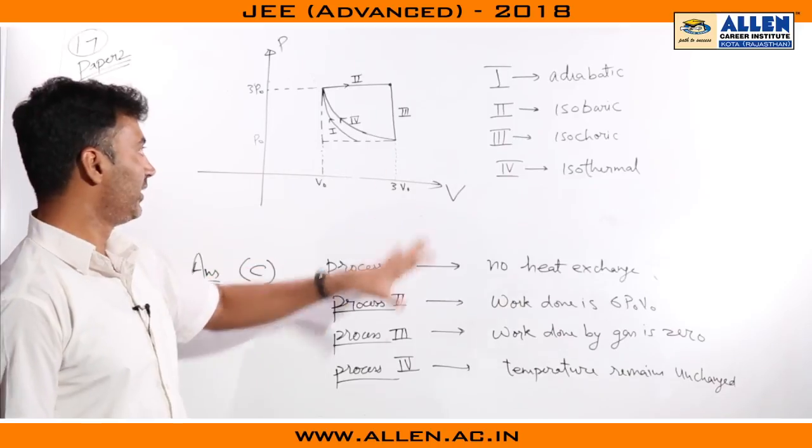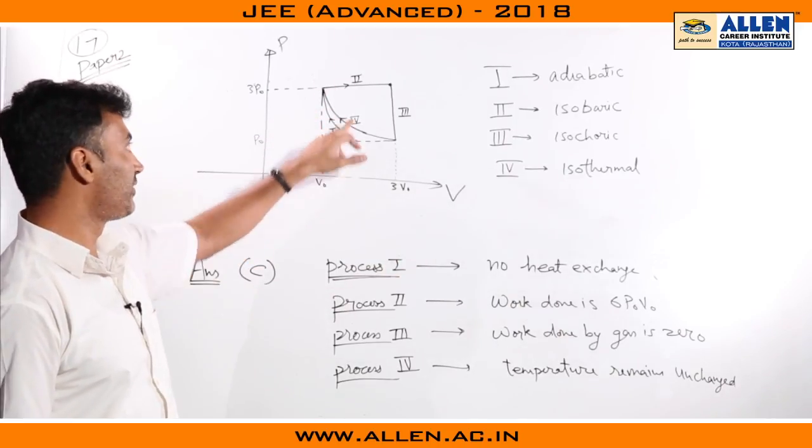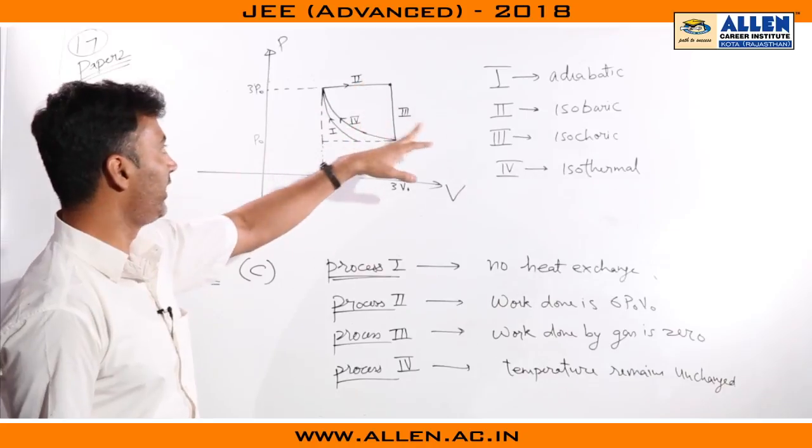Question 17 paper 2. This was probably the easiest question of the lot. Standard PV graphs were given, processes 1, 2, 3, and 4.